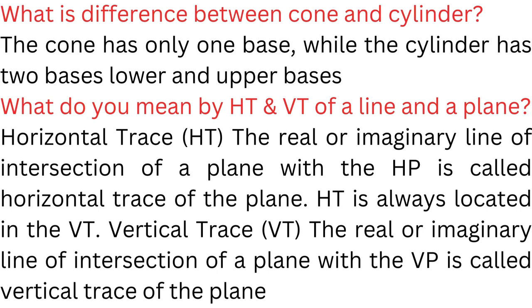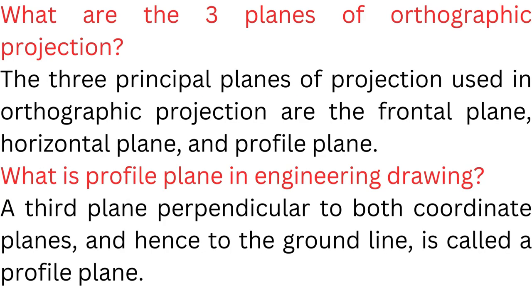What do you mean by HT and VT of a line and a plane? Horizontal Trace (HT): the real or imaginary line of intersection of a plane with the HP is called the horizontal trace of the plane. Vertical Trace (VT): the real or imaginary line of intersection of a plane with the VP is called the vertical trace of the plane.